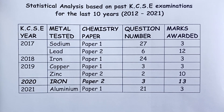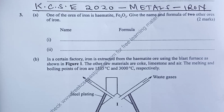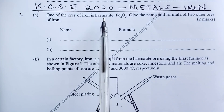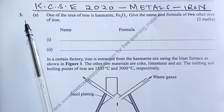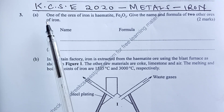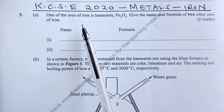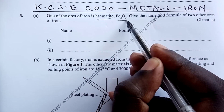So, as mentioned earlier, this video will take you through 2020 chemistry paper 2, where iron metal was tested. In 2020 KCSE chemistry paper 2, iron metal was tested in question number 3. Part A stated that one of the ores of iron is hematite, with the formula given, and we were asked to give the name and the formula of two other ores of iron.